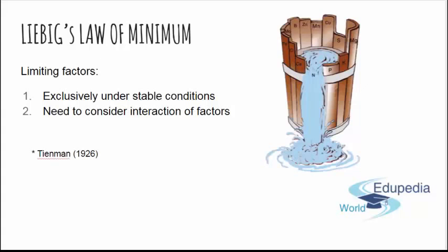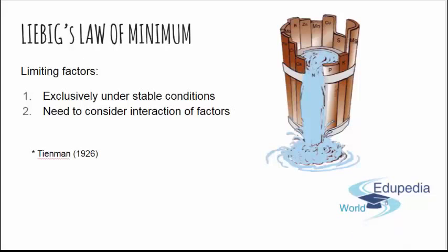I guess you remember the bucket. Liebig's Law of the Minimum says that a specifically limiting factor is the one that the species is mostly sensitive to. A bit of an update today will be the limiting factors of this law of minimum. Those two are: this law is only valid under stable conditions, and you definitely need to consider the interaction of those factors.